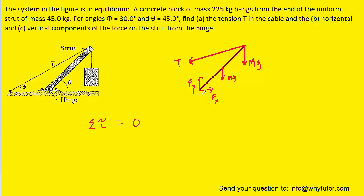With any torque problem, we want to choose a pivot point on our object. Our object is the strut, so we select a pivot located somewhere along the strut. It's usually advantageous to select a point where the greatest number of unknown forces passes through. Since we don't know fx or fy, we'll select our pivot at that point. The torques produced by those two unknown forces will be zero, because any force passing through the rotational point produces zero torque — so we basically ignore these two forces in the torque equation.